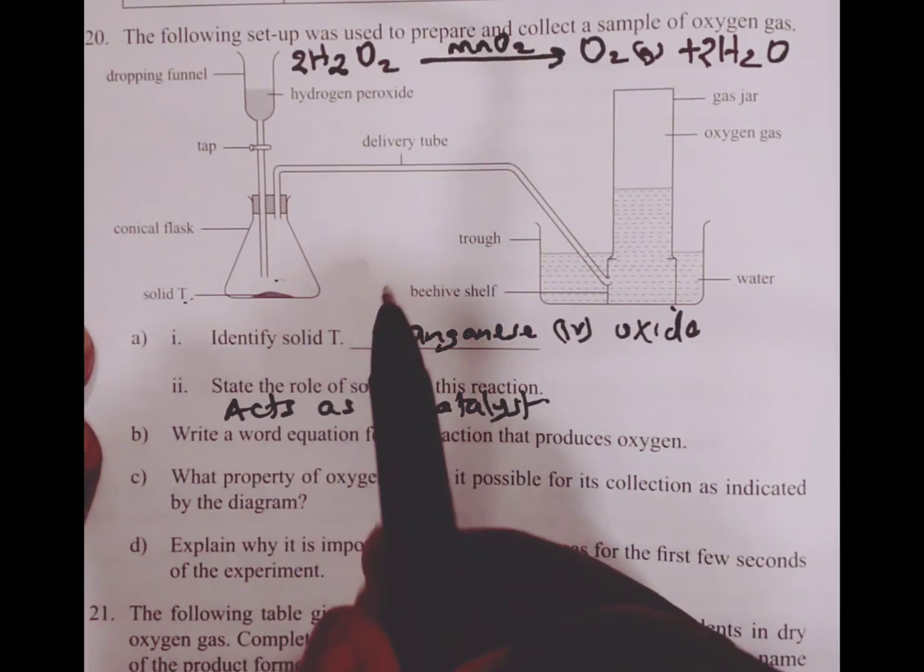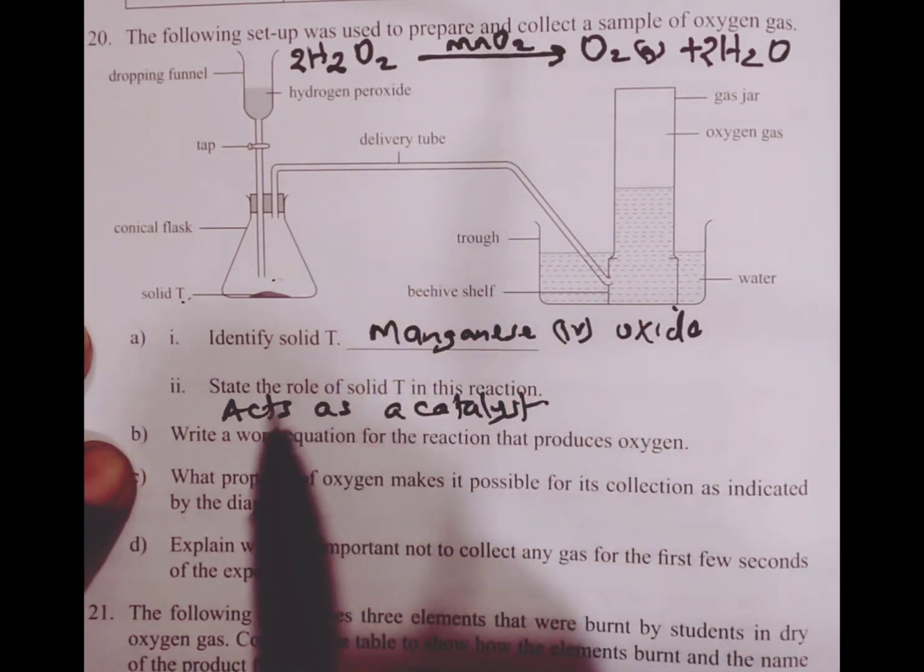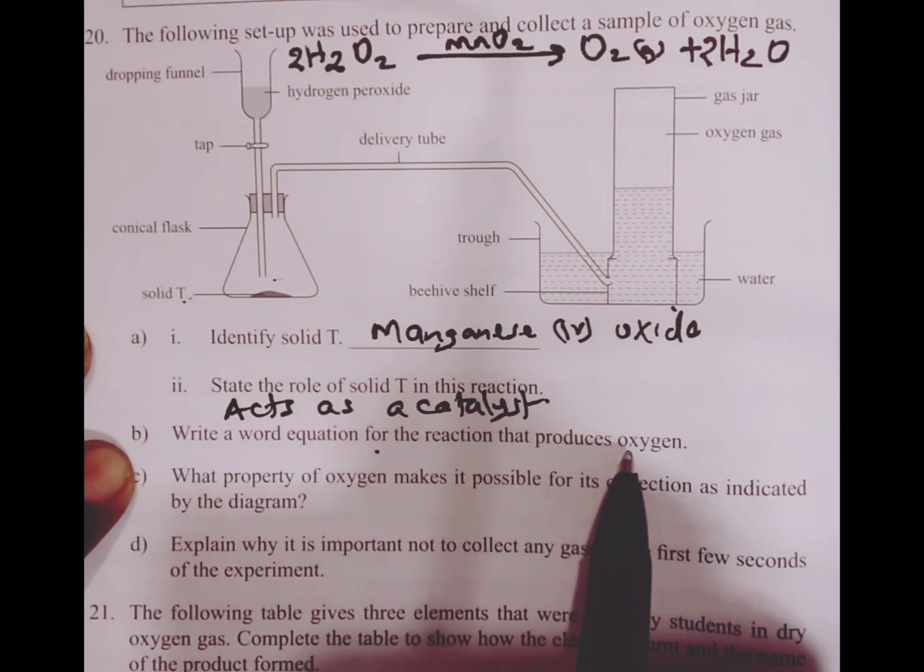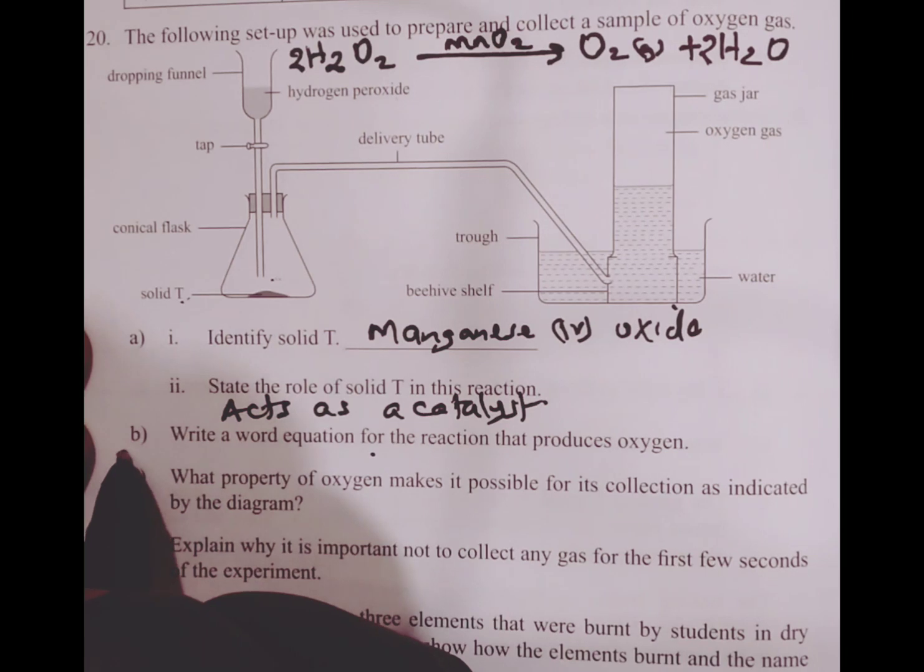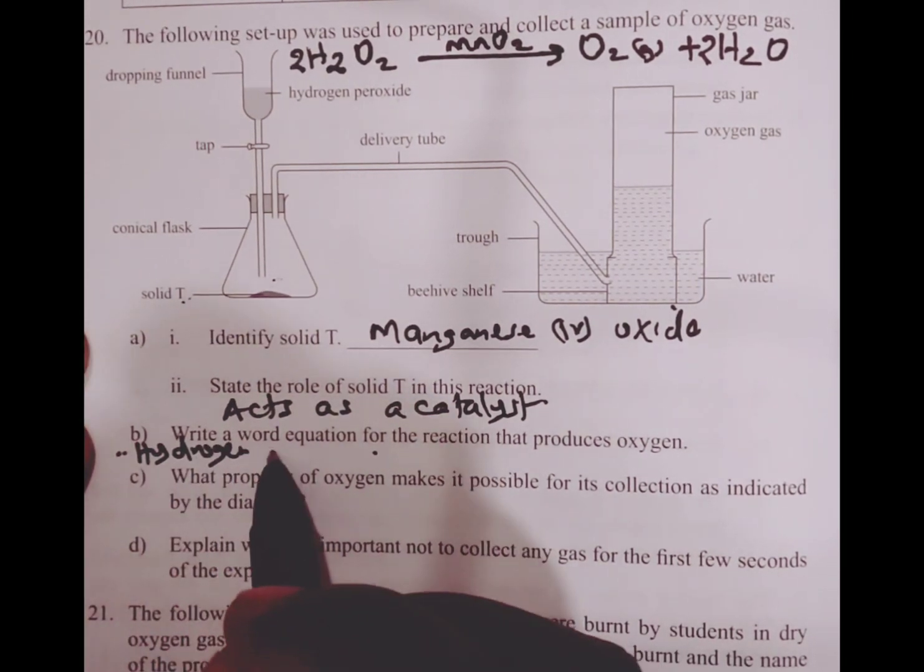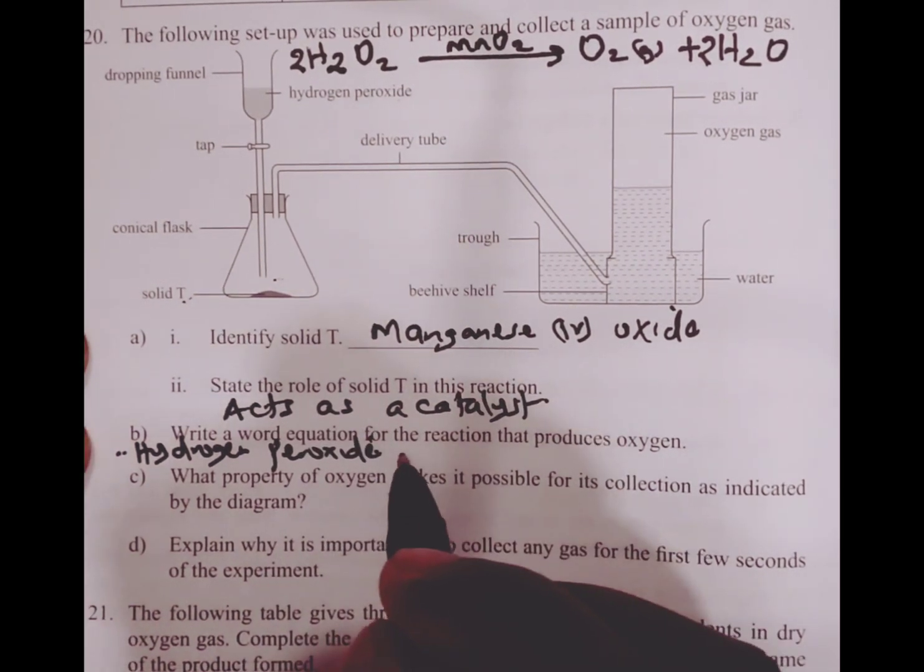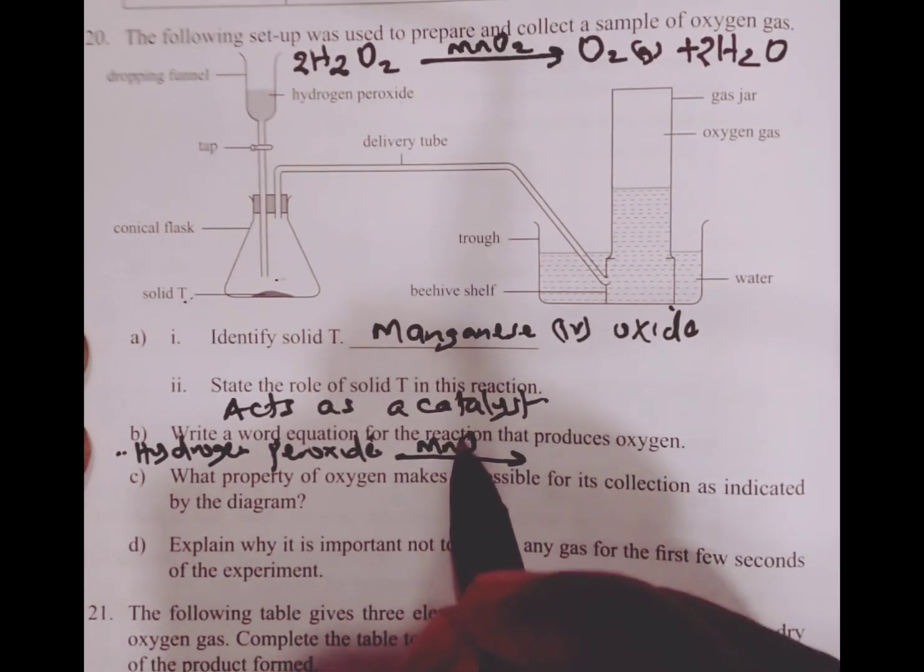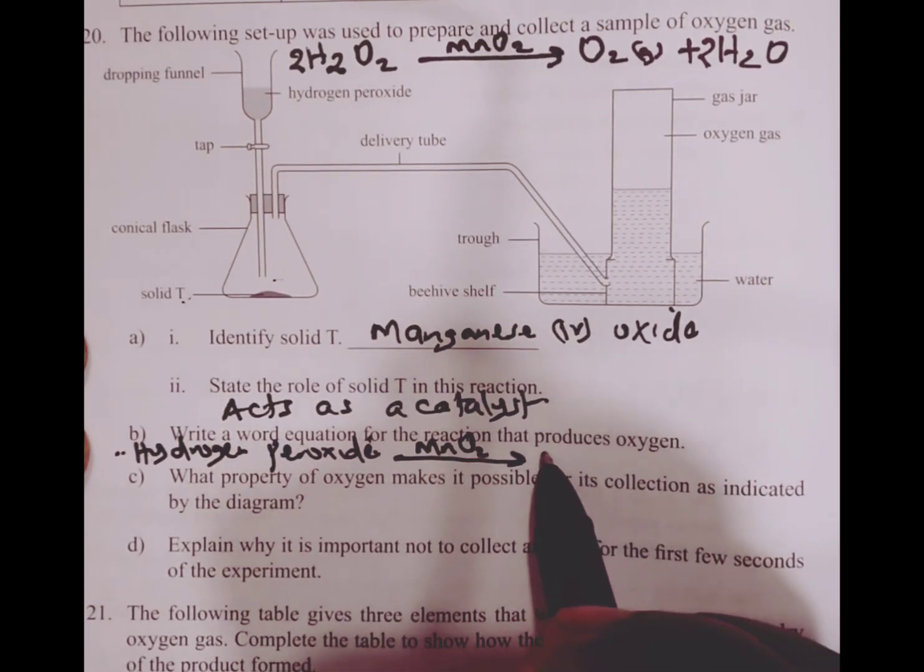Then we proceed with the questions. Write a word equation for the reaction that produces oxygen. A word equation is where we have hydrogen peroxide decomposing in the presence of manganese(IV) oxide